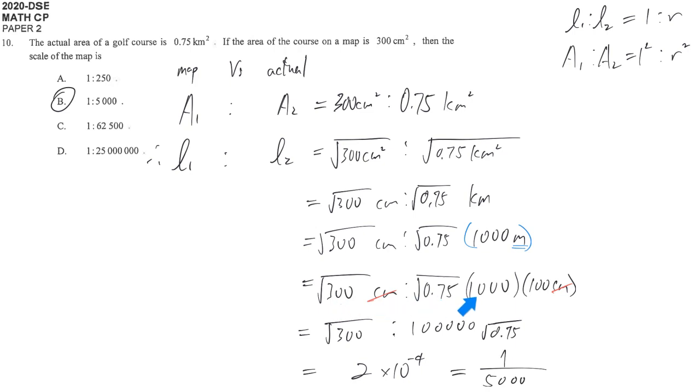But if you don't want to use a calculator, how can you simplify this? You may try to multiply square root 0.75 on both sides. Because it's basically a fraction, if you multiply both sides by the same value, then you won't change the value of the fraction or the ratio.